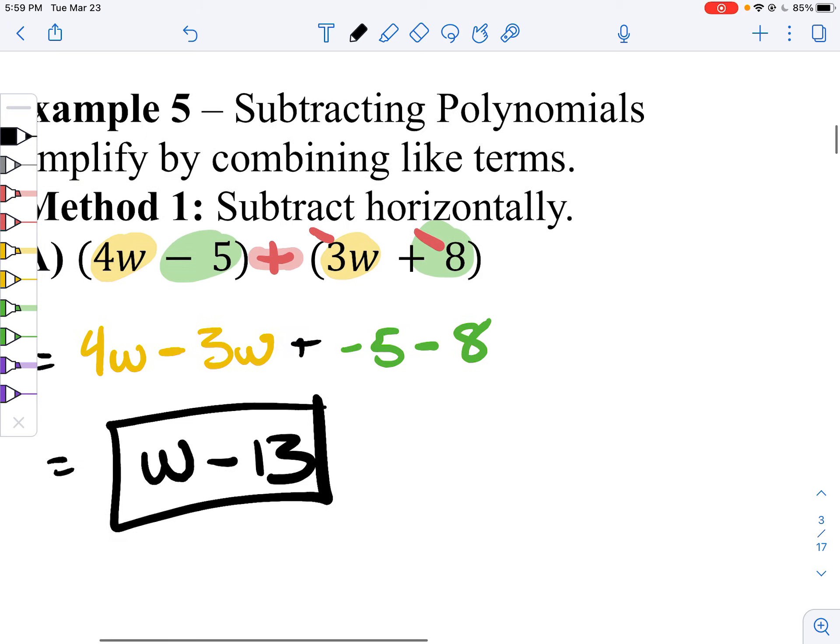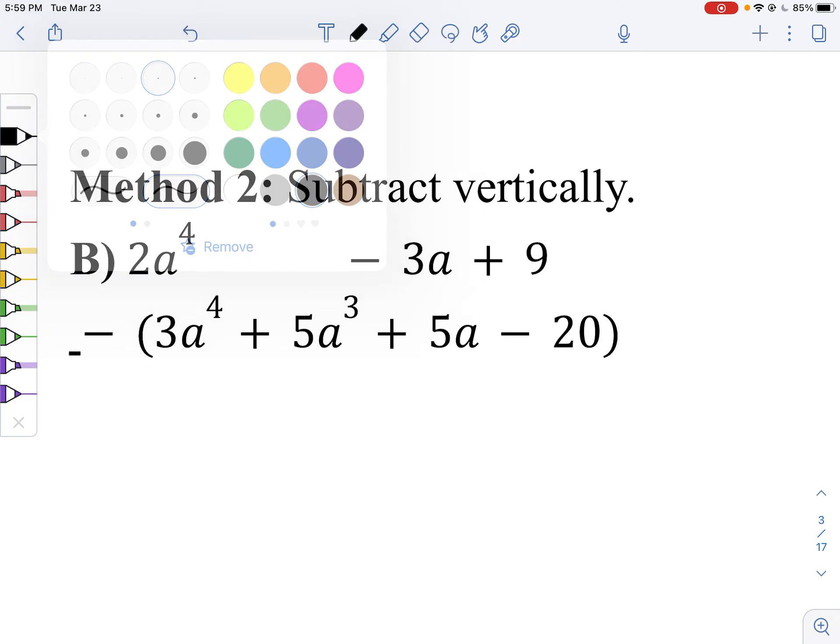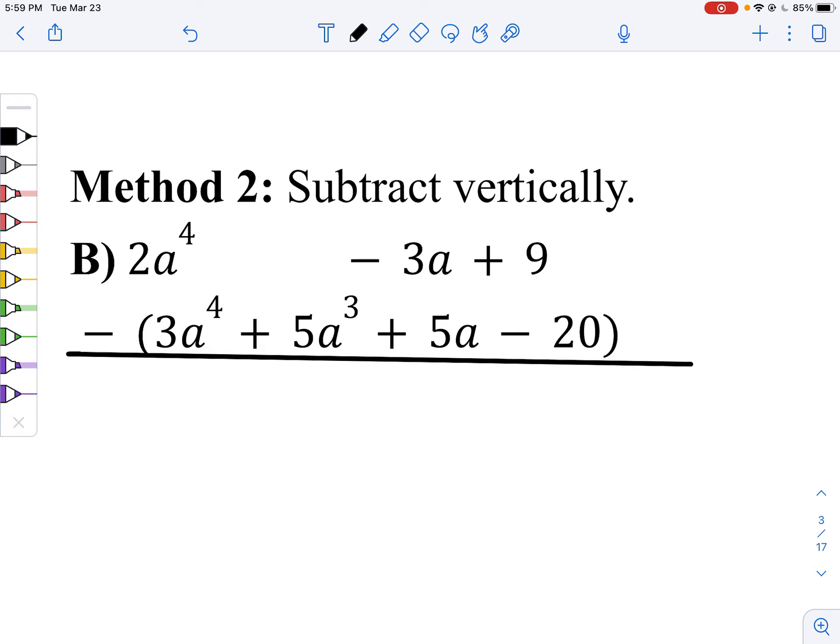Last guy, my preferred way is vertical, but what's very important is you need to take your subtraction and distribute him to everybody. So it gives you a minus 3a, minus 5a cubed, minus 5a, plus 20. And we're still going to combine like terms.